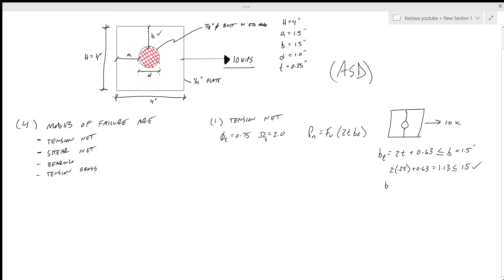Okay, so that's good. So b_e equals 1.13 inches. That means P_n is going to equal F_u is 58 – we're going to assume this is A36 steel. So A36 steel, you have an F_y equal to 36 ksi and F_u equals 58 ksi minimum. All right, 58 times 2t b_e is 2 times 0.25 times 1.13 all over 2, which equals 16.4 kip. We're okay because that is greater than 10 kips.